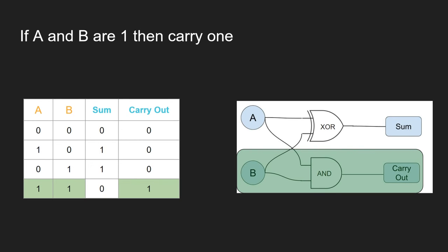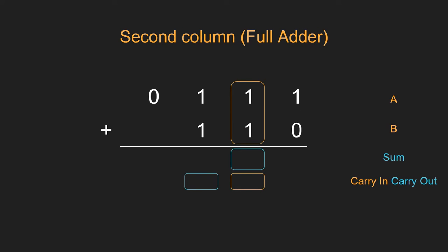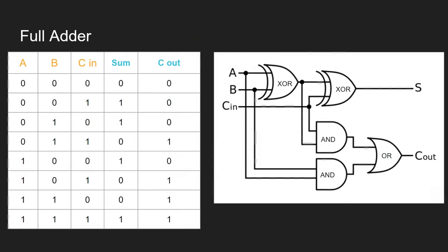Now let's have a look at the slightly more complicated one, where we need to consider three inputs. On the second column and from there onwards, we've got the 1 and the 1 from A and B, but we also might have a carry-in from the previous column. So we need to add these three inputs together and do the logic based on all three of them. There are going to be two outputs: a SUM OUT, and then any carry that needs to happen. Looking at the truth table with three inputs, we've got 8 possibilities. If all of them are 0, that results in a SUM of 0 and a carry of 0.